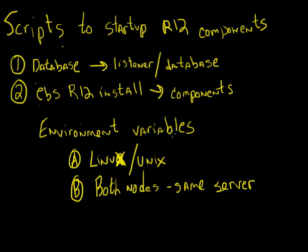Oracle makes it relatively easy for us because they create these environment files that we can source at the Linux or Unix level, and that will set all the environment variables for us. So the question becomes: should we create a script that sets our environment variables and then starts up all the database components, and then have a second file that sets the environment variables for the mid-tier and then starts up all of the eBusiness Suite R12 components?